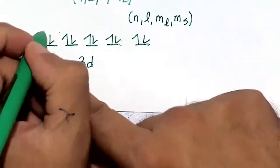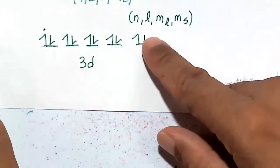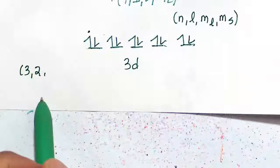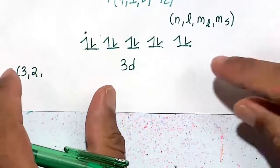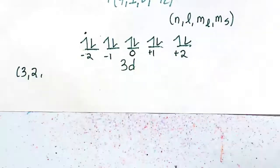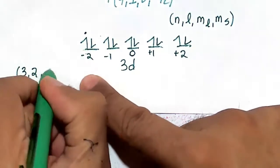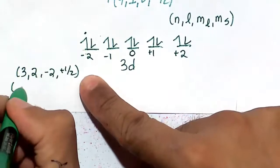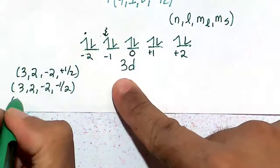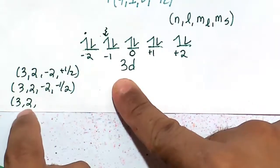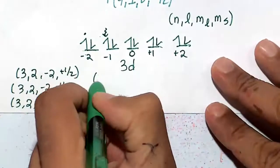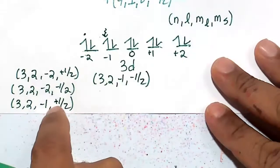For the first 3d electron: n equals 3, l equals 2 for a d orbital, m sub l is minus 2, and m sub s is plus 1 half. Its pair is the same except m sub s is minus 1 half. The next electron is n equals 3, l equals 2, m sub l is minus 1, m sub s is plus 1 half. Its pair is the same except m sub s is minus 1 half.